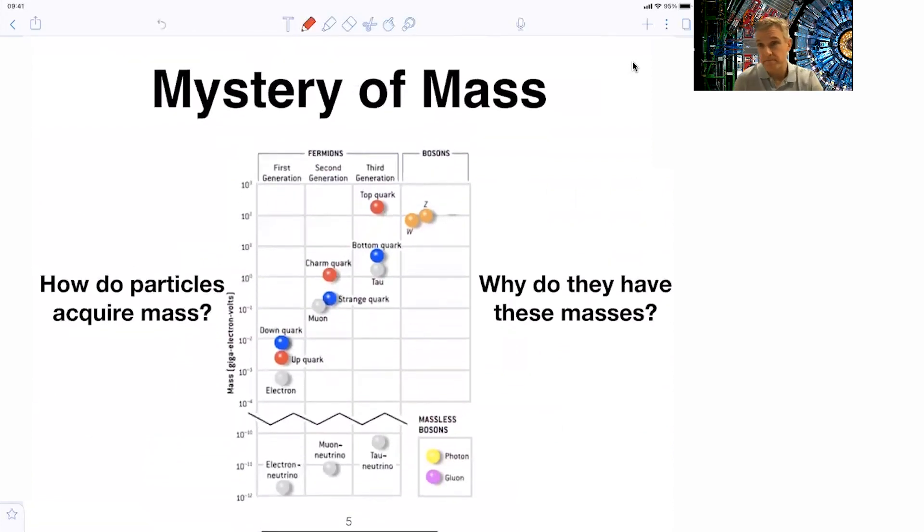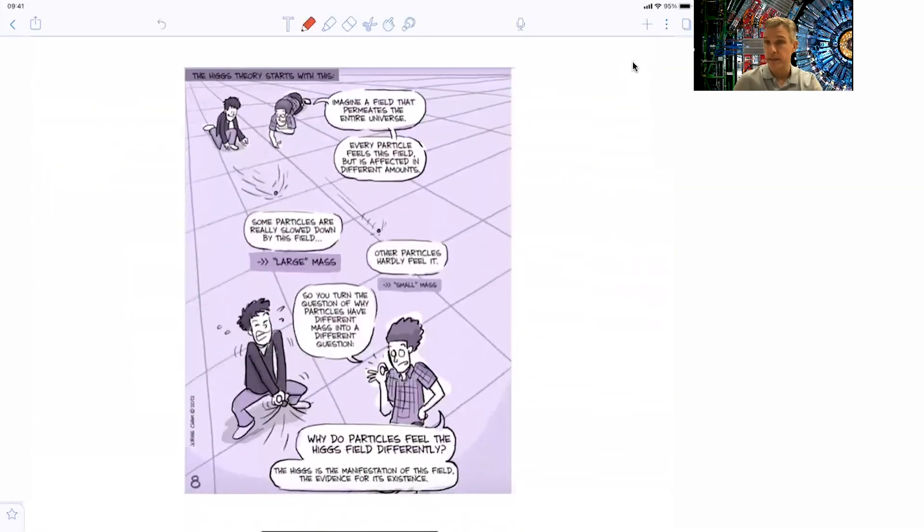So basically solved, right? Not quite. It's really mysterious to see how different the masses of those elementary particles actually are. You see this on this logarithmic table. Here are our friends, the down quarks, the up quarks, and the electron. If you compare this, for example, with the heaviest known elementary particle, the top quark, you see many orders of magnitude difference. So how does this actually work? And you see some of the bosons, the force carriers, are massive. Others, like the photon and the gluons, are massless.